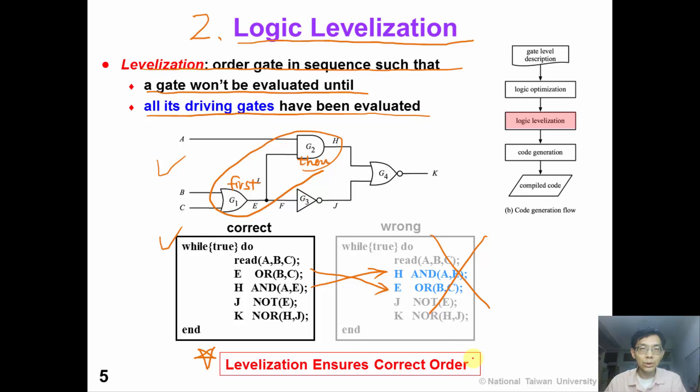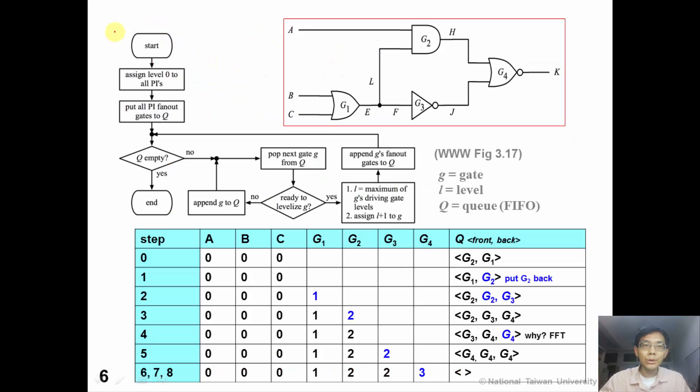So how can we do it? In our textbook, we show this algorithm to levelize the circuit. Take the same circuit for example. Initially, we assign level zero to all the primary inputs, which are A, B, and C. And then we put all the primary input fanout gates to a queue.